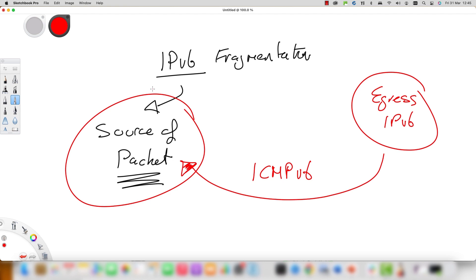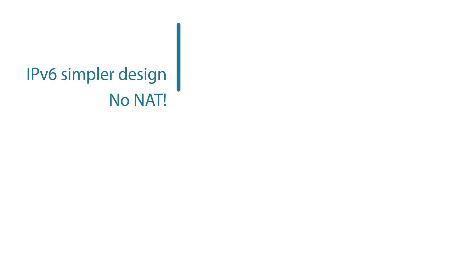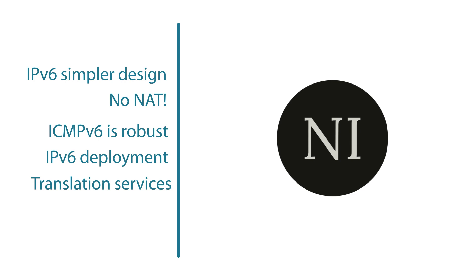The Packet Too Big message includes the MTU size of the link in bytes so that the source can adjust the packet size for retransmission. IPv6 and other extension headers are unfragmentable, because every fragment must go through routers and the information stored in these extension headers is required at every router. This is why the IPv6 packet is divided into two parts: the unfragmentable part, which does not encounter any modifications in between, and the fragmentable part, which is divided into many small fragments such as fragment one and fragment two.